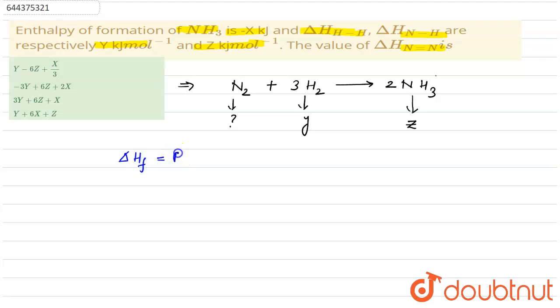Now the enthalpy of formation for any reaction is given as bond energy of reactant minus bond energy of product.